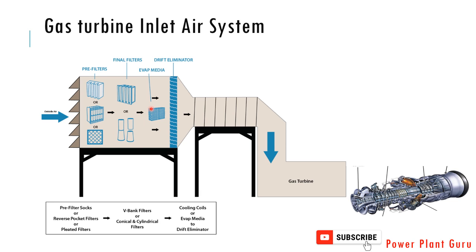After this there is an evaporative media. This evaporative media is where you can spray some amount of water to cool the temperature of the air. This is normally not used in a wide variety of machines, but where desert or high temperature areas are present, this is used to keep the air temperature low.